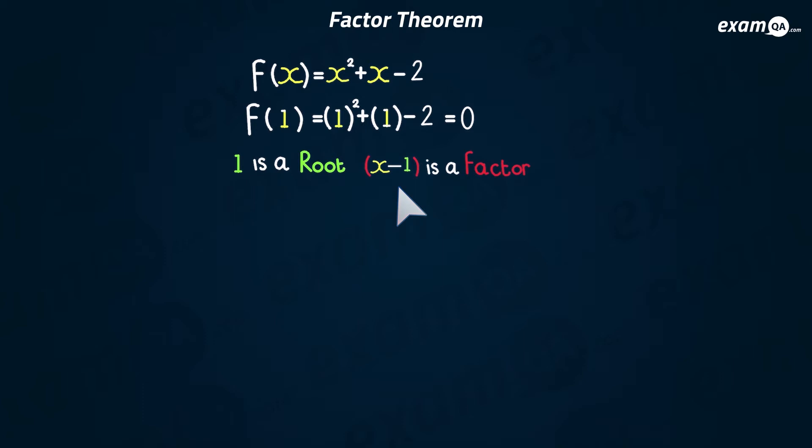And of course, that means x minus 1 was a factor. Next, we try out some more values, because we know there's another factor. So let's now try minus 1. So replace all the x's with minus 1, and we get minus 2. So we weren't that lucky this time. Minus 1 is not a root.